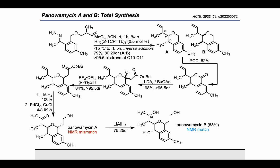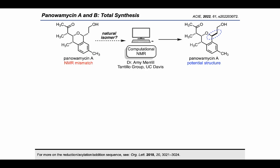This led us to the conclusion that the structure of panolamycin A had been misassigned. In order to determine the identity of the natural substance, we reached out to our computational collaborators in the Tantillo lab to see if they could computationally predict the correct structure based on a comparison between calculated and reported NMR spectra. Dr. Amy Merrill performed these calculations, showing that the structure proposed by Omura and coworkers was indeed a pretty good match, but another isomer had a much better mean average deviation with the natural substance. This isomer was suggested to be the correct structure of panolamycin A.